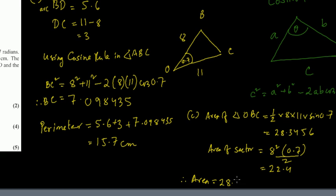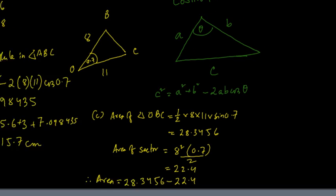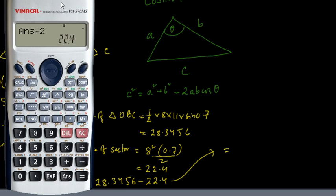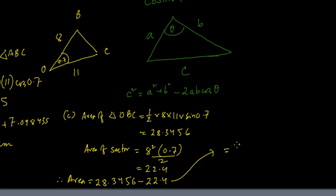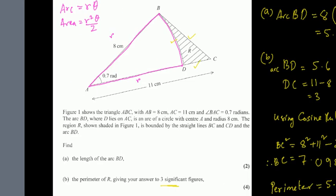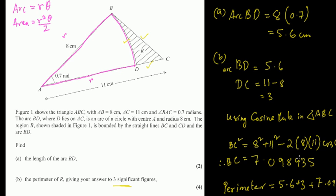Area of shaded region = 28.3456 - 22.4 = 5.9456. Rounded to three significant figures, the area equals 5.95 centimetres squared.